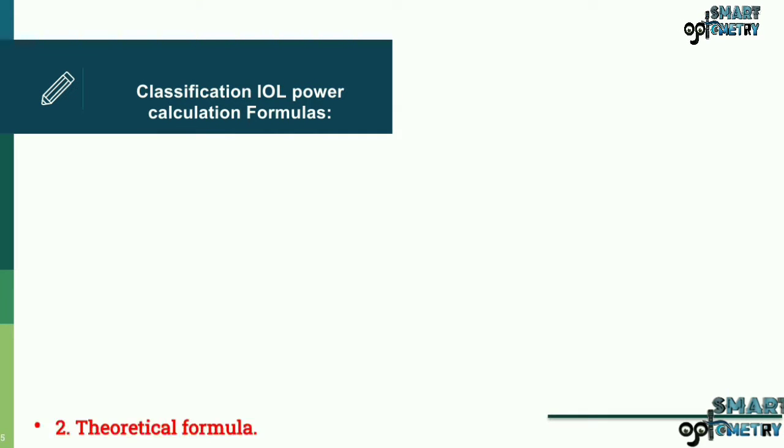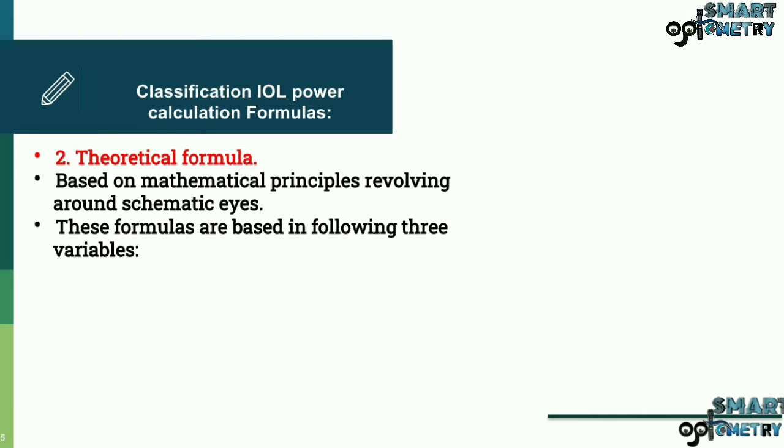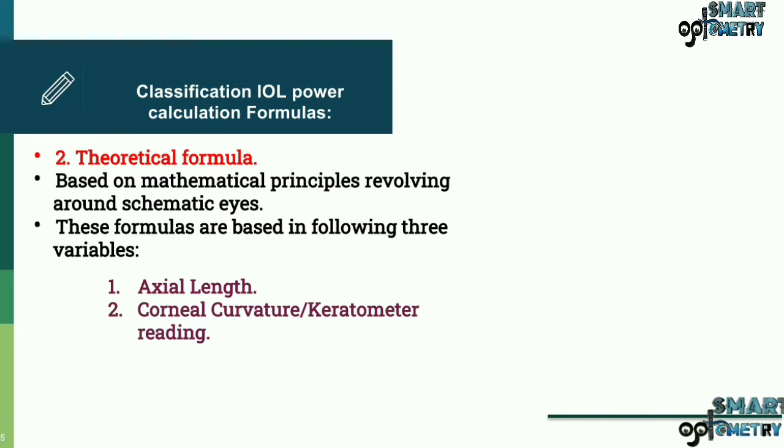Now theoretical formulas. These are based on mathematical principles revolving around schematic eyes. These formulas are based on following three variables: A. axial length, B. corneal curvature or keratometer reading, C. estimated postoperative anterior chamber depth.